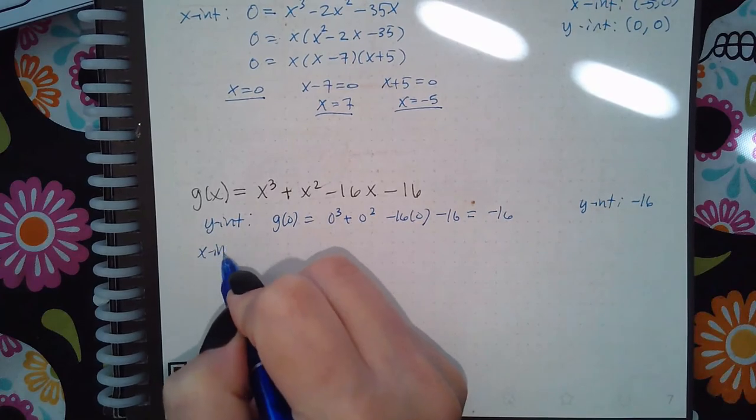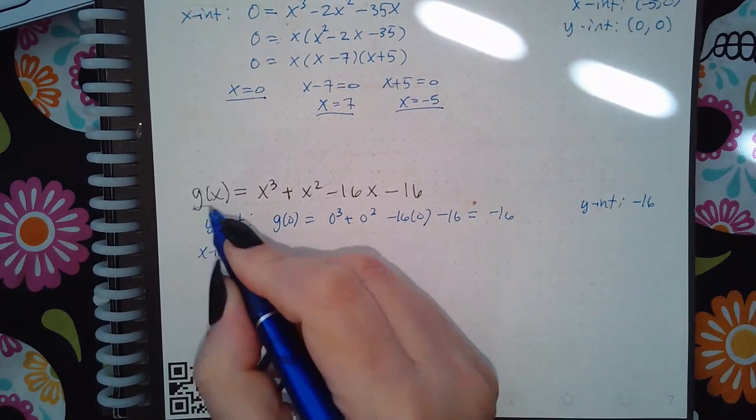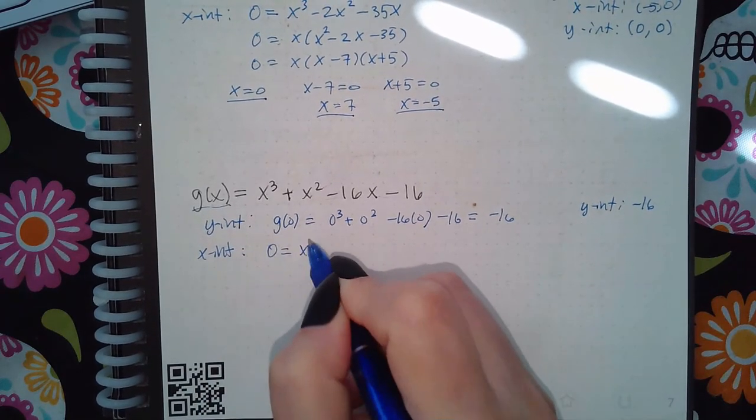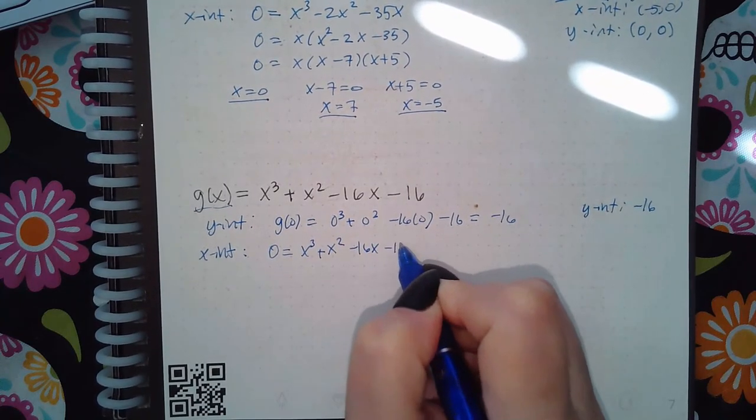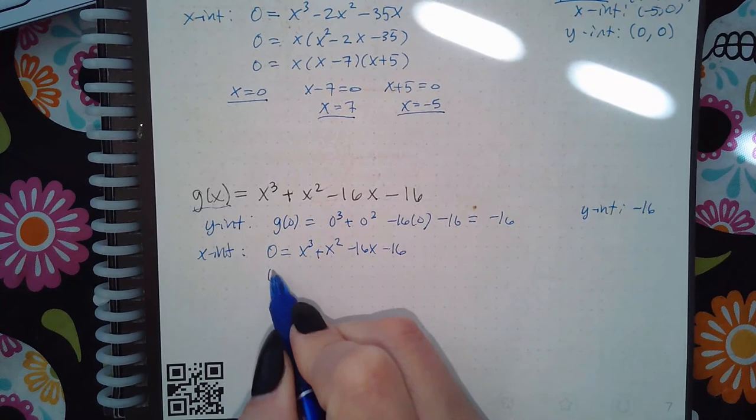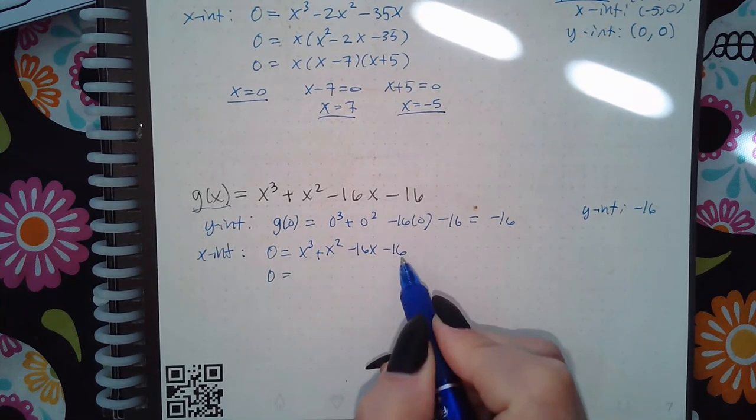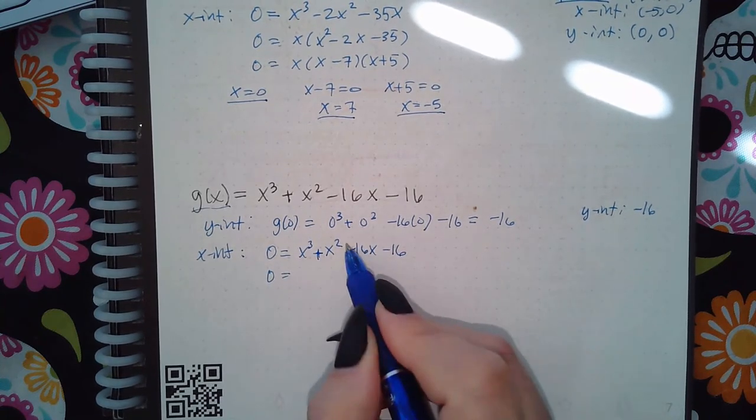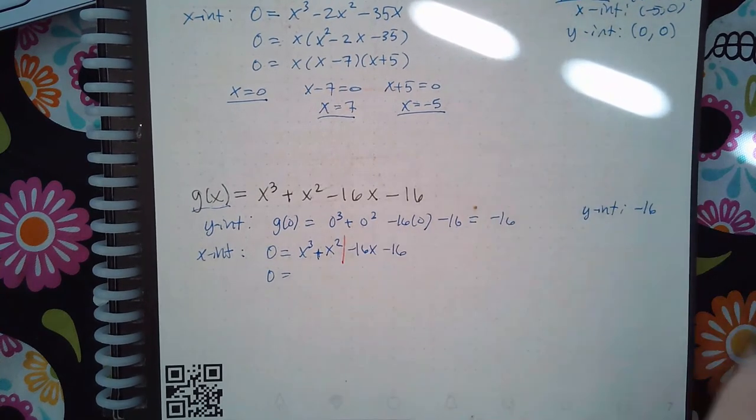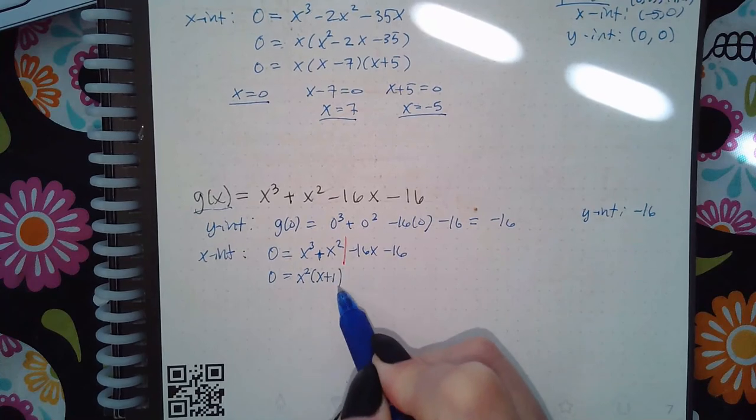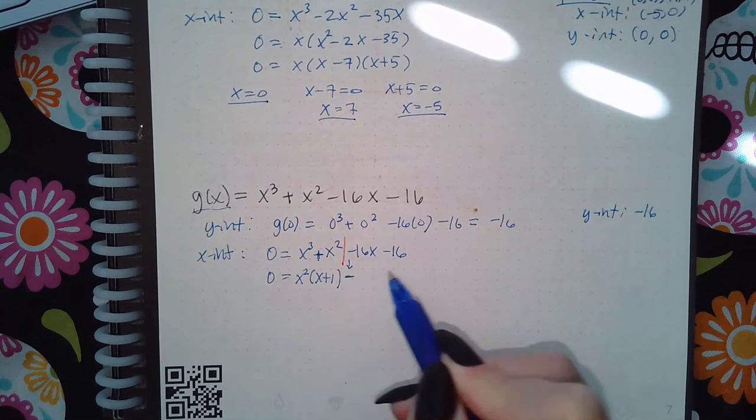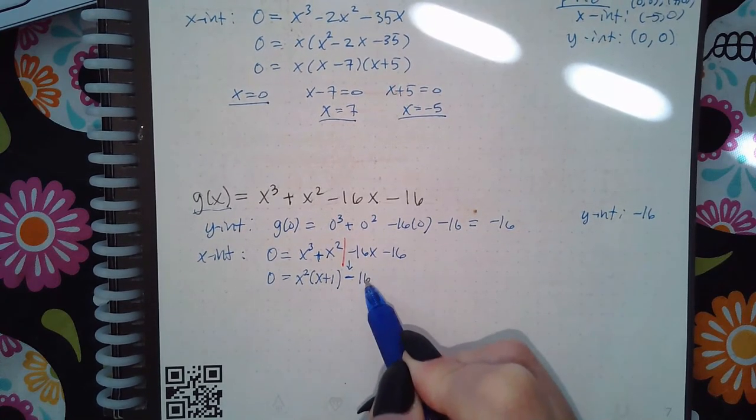Now for the x-intercepts, you set the y value equal to 0, and then I'm supposed to factor this. This is a four-term expression, so I'm going to do grouping. This side has an x squared in common, which leaves me with x plus 1. I must use the minus sign. This side has a 16 in common.